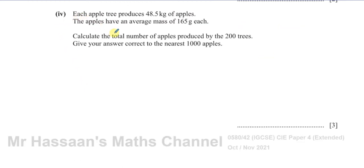Now part four says: each apple tree produces 48.5 kilograms of apples. The apples have an average mass of 165 grams each. Calculate the total number of apples produced by the 200 trees.